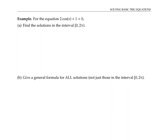Let me start by rewriting this equation to isolate the tricky part, which is cosine of x. So I'm going to write two cosine x equals negative one, and then divide both sides by two. Now I'm looking for the angles x between zero and two pi whose cosine is negative one half.